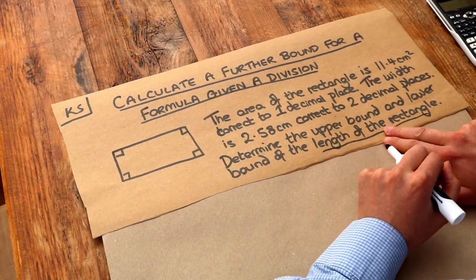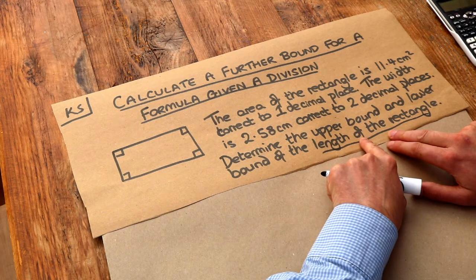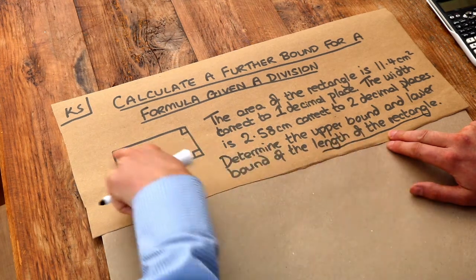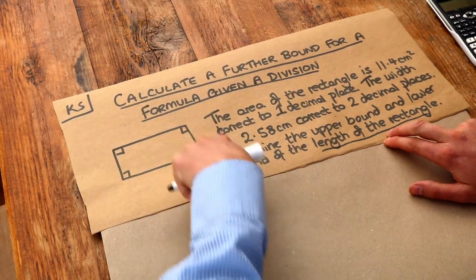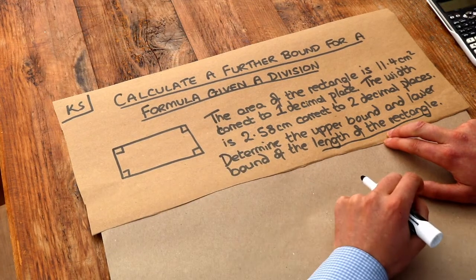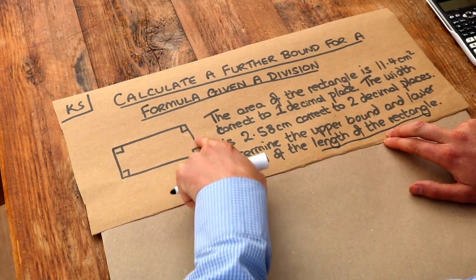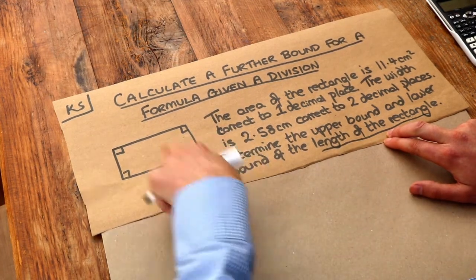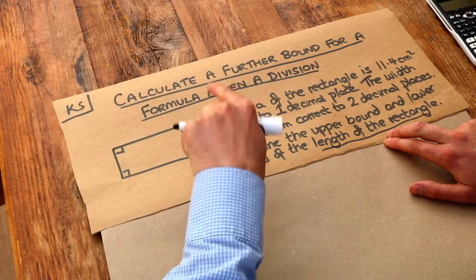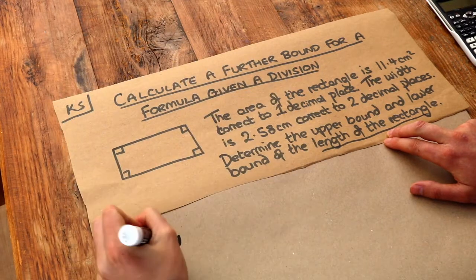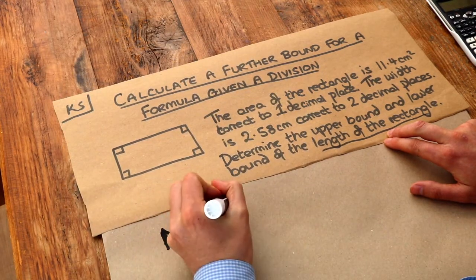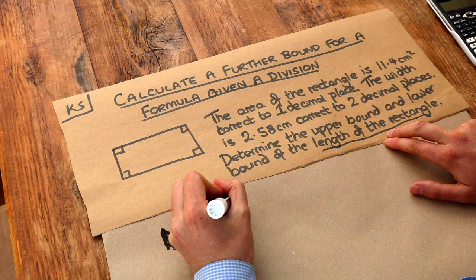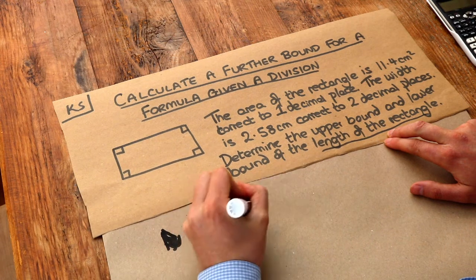Now let's firstly think: how would we find the length of a rectangle? Well, if we started with the area and divided by the width, that would give us the length. Because width times length is area, and therefore area divided by width is length. So the length of the rectangle is the area divided by the width.